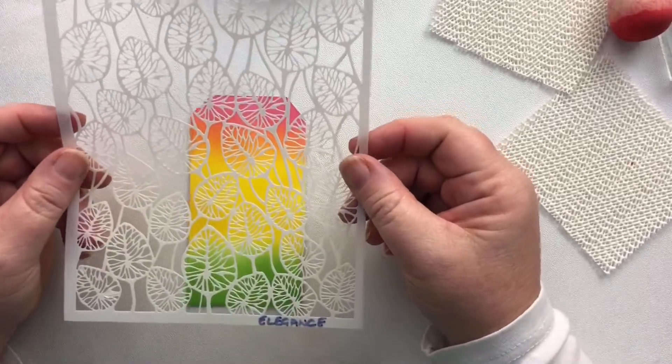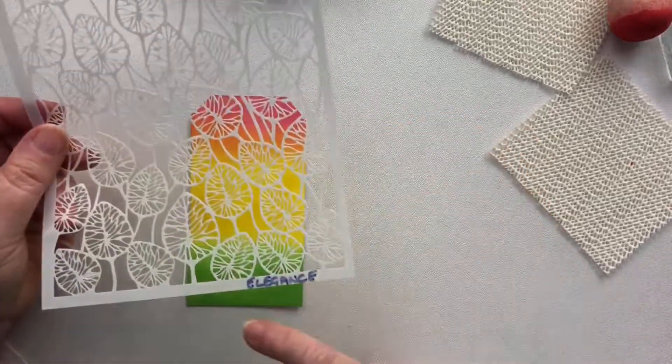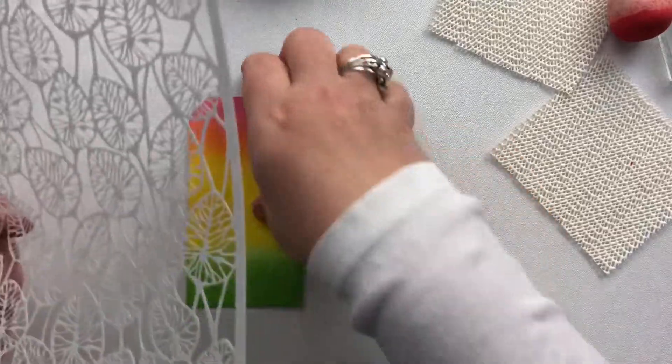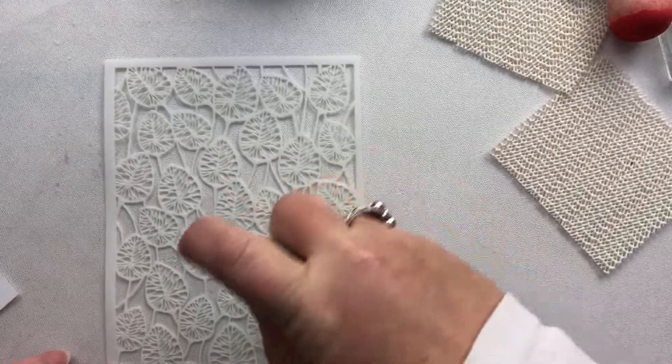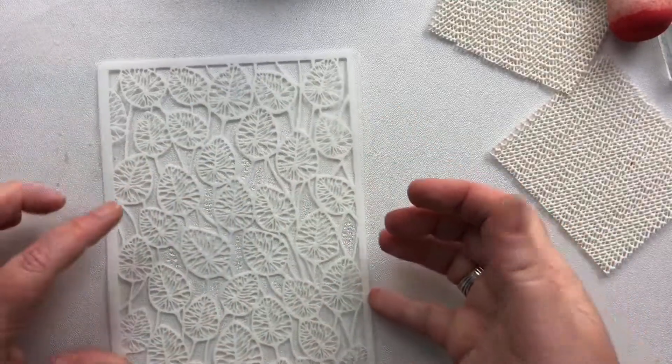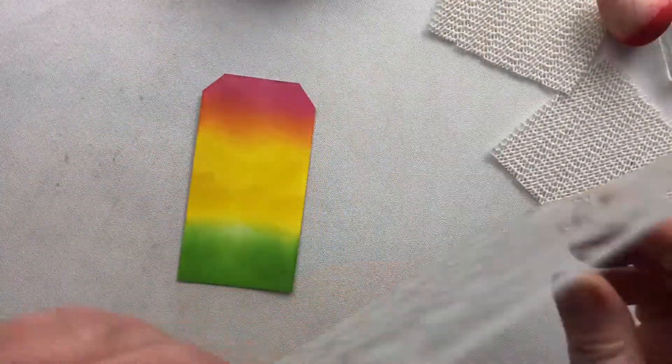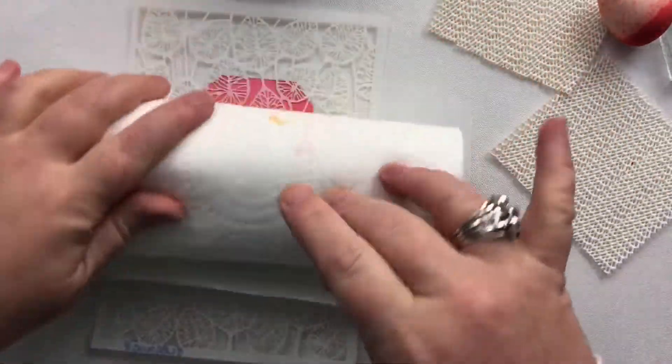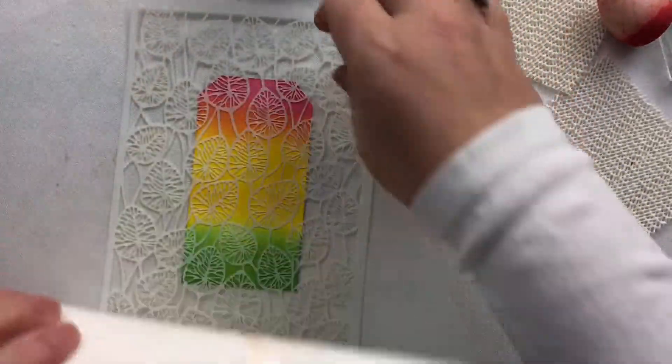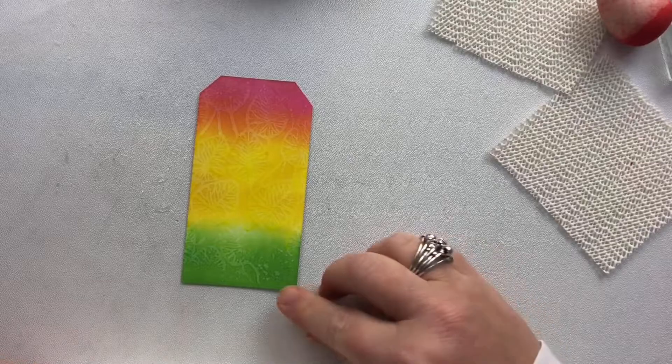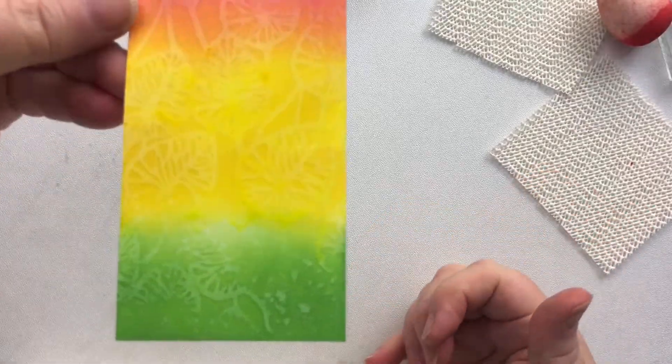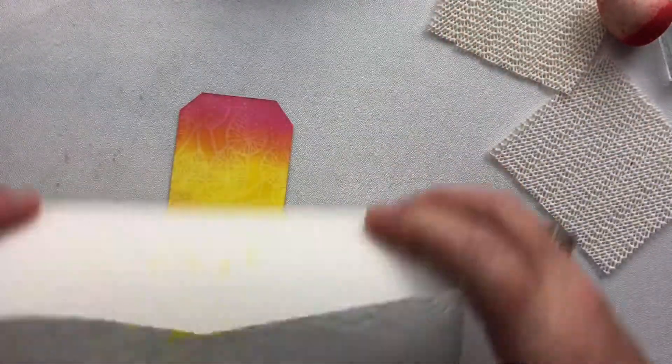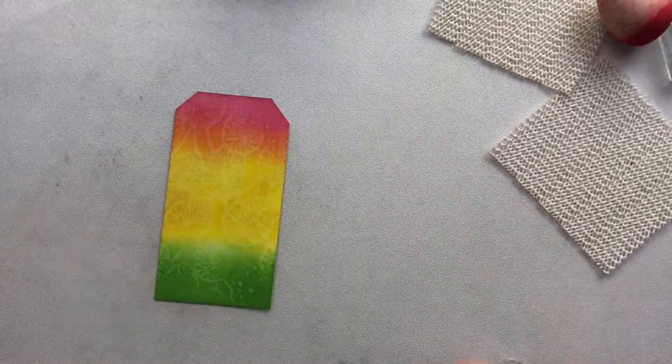Next thing I'm going to do is I'm going to take one of my stencils. I'm using the stencil from Lavinia called Elegance and I'm just going to spritz it with some water. I'm going to tap it off so it's not completely sopping and lay it face down on my tag. Pick up all the water that's in between the stencil and look at that. Isn't that fun? There we go.